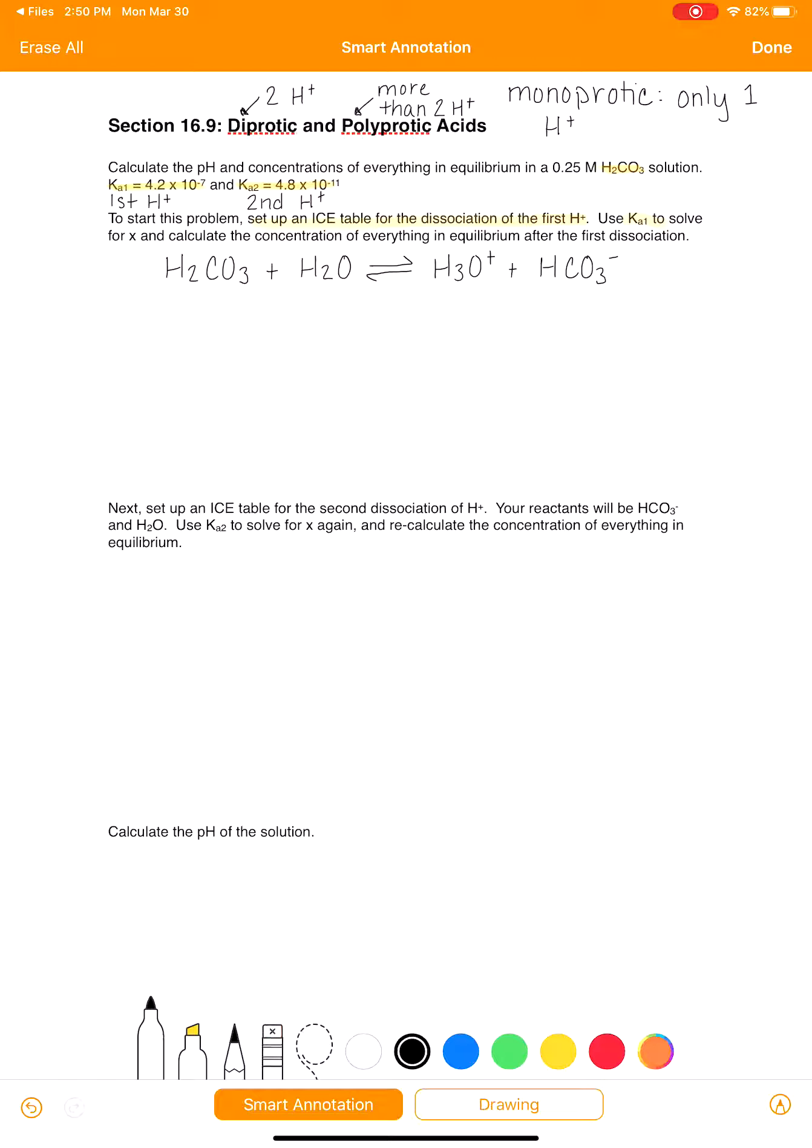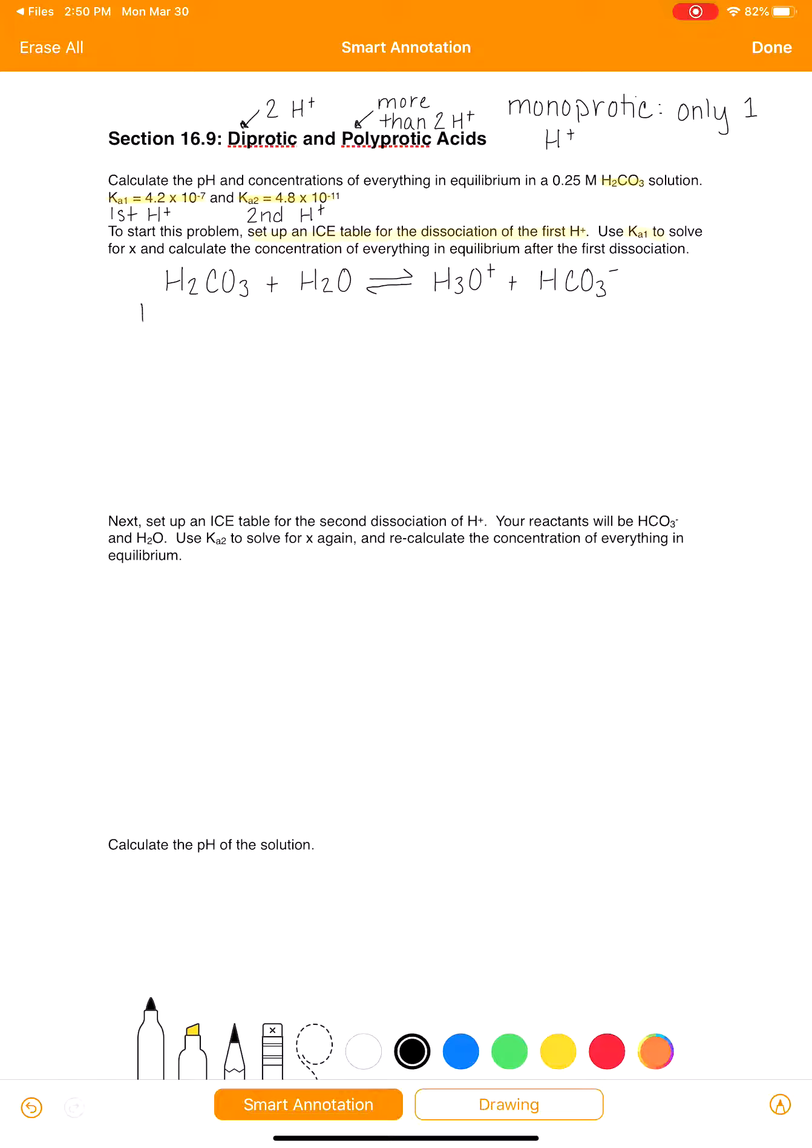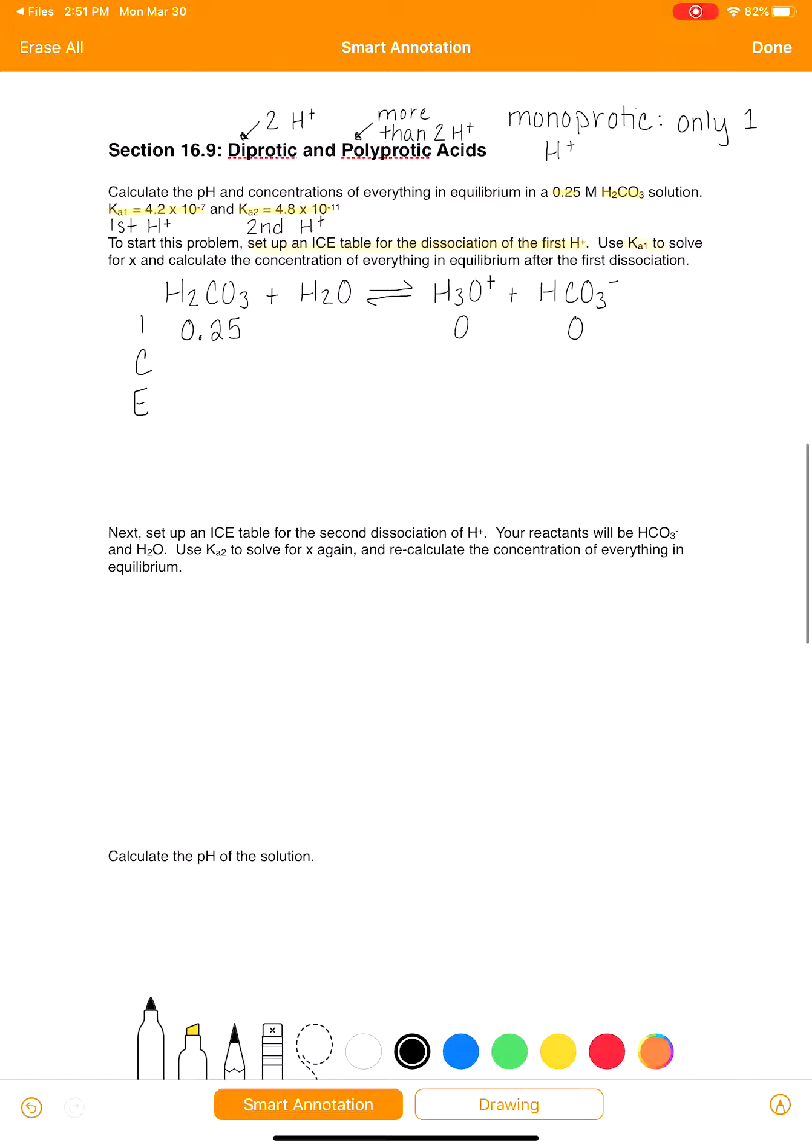So there's our balanced chemical equation. And now we need to make an ICE table. Our initial concentration is 0.25. Initially, we have no product. We don't know how much this is going to react, but we know that it's going to be some amount. We're going to call it X, plus X and plus X on the right side because of the stoichiometry.